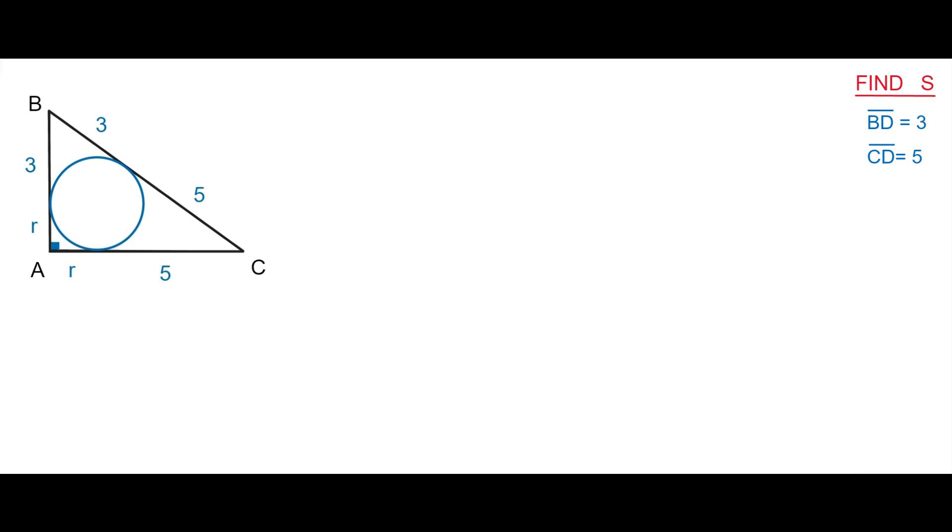So finally we have a right triangle where one of the legs is 3 plus R, the next leg is 5 plus R, and the hypotenuse is 8.